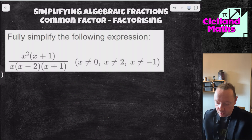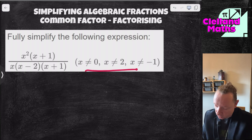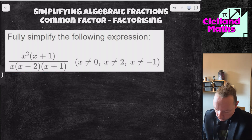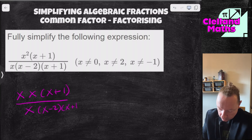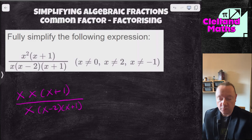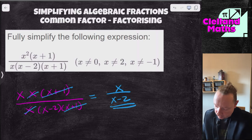Let's look at another example from maths.scot. Simplify x squared times (x+1) over x times (x-2) times (x+1). It's already factorised. Writing x squared as x times x, I can see x plus 1 and x on both top and bottom. The x plus 1s cancel and one x cancels, leaving x over (x minus 2). Don't cancel further — the minus 2 is attached to that x, so you can't touch it.